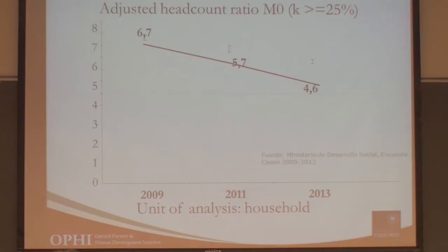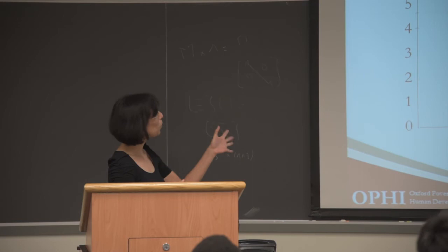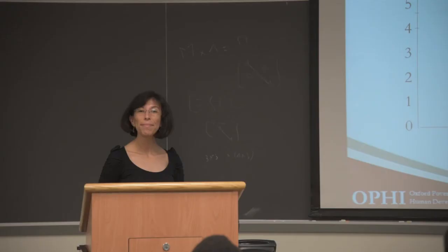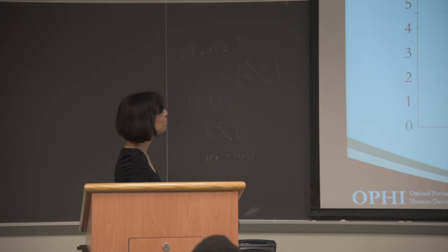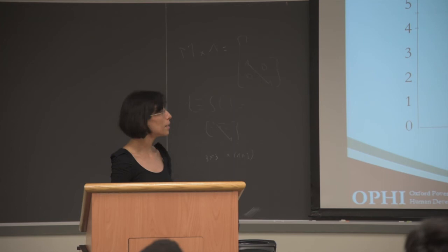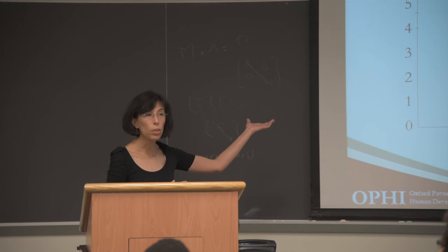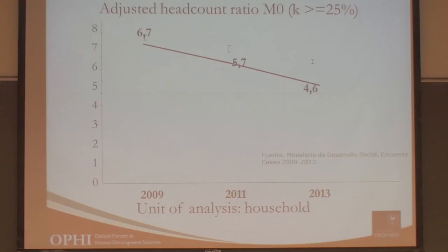They have computed the adjusted headcount ratio M0. Some may note that we said this morning that we shouldn't report M0 in percentage points rather than as an index, but they reported it in percentage — perhaps easier for policymakers to understand 6.7% than just an index. From 2009 to 2013, there is a clear reduction. The cut-off K was chosen at 25% so that a household could be identified as deprived in at least one complete dimension, given that they have four dimensions.